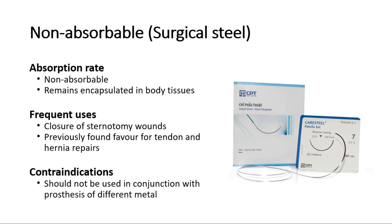Third is surgical steel. Its uses include closure of sternotomy wounds, and it was previously used for tendon and hernia repairs. It is contraindicated to be used with prosthesis of different metal.